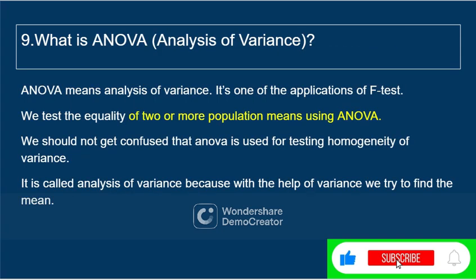What is ANOVA or analysis of variance? ANOVA is an application of the F-test. It is used to test the equality of two or more population means — when we have two or more populations and want to find whether their means are equal. An important point: despite being called analysis of variance, we are not finding the variance; we are actually finding the mean.